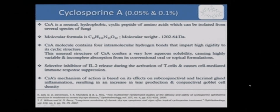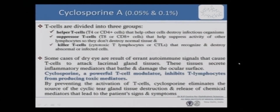When you look at cyclosporine, it is a neutral hydrophobic cyclic peptide amino acid molecule with a given molecular weight as depicted here. It acts by inhibiting interleukin-2 release from activated T cells — that's a lot of immunology to understand for most of us. To simplify it, we need to understand at what molecular level this molecule acts, otherwise your treatment is going to be a failure when you prescribe this for your patients.